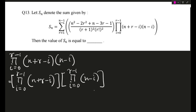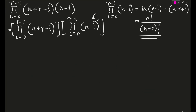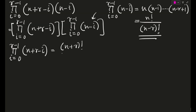Now let's expand each part. For pi from i equals 0 to r minus 1 of (n − i): this gives n · (n−1) · (n−2) · ... · (n−r+1), which is n! / (n−r)!. Similarly, for pi from i equals 0 to r minus 1 of (n + r − i): this evaluates to (n+r)! / n!.